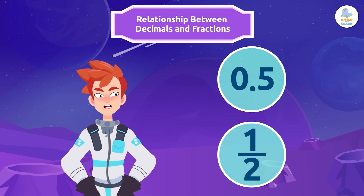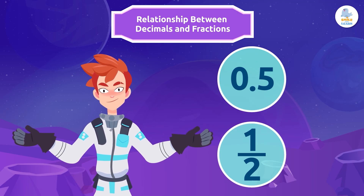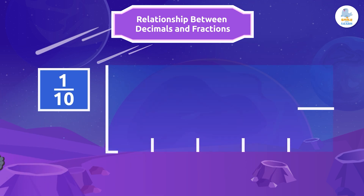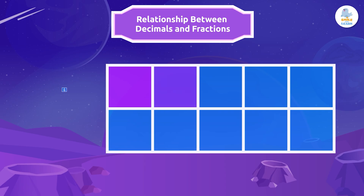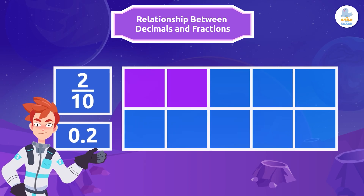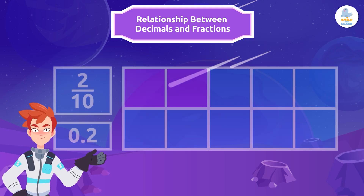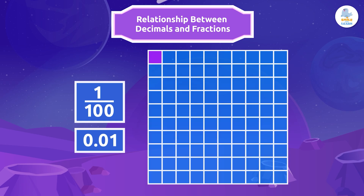We can represent a decimal as a fraction and vice versa. Let me show you. This part here represents one tenth of the total, because the whole is divided into ten equal parts. Now we have two tenths. Let's look at another example: each part is one hundredth, since we divided the whole into one hundred equal parts.